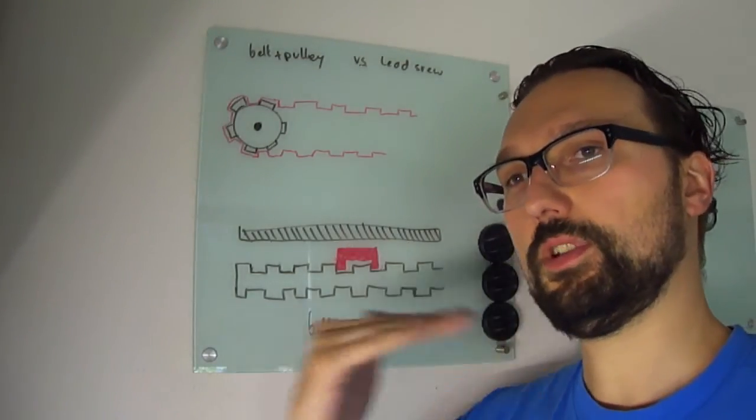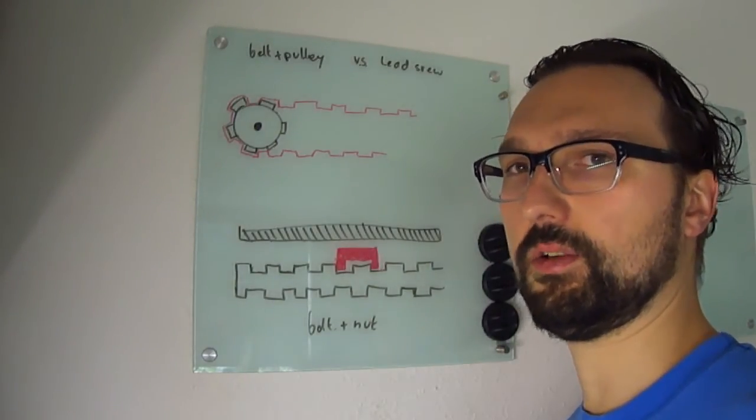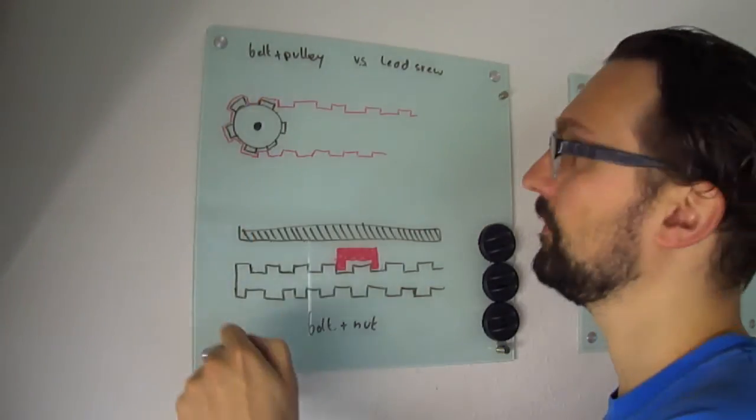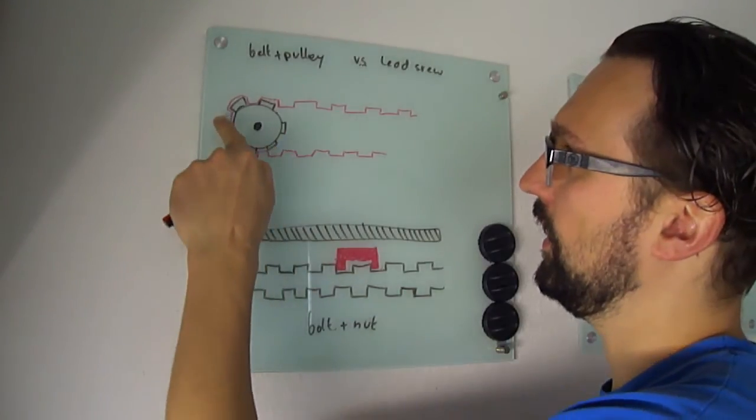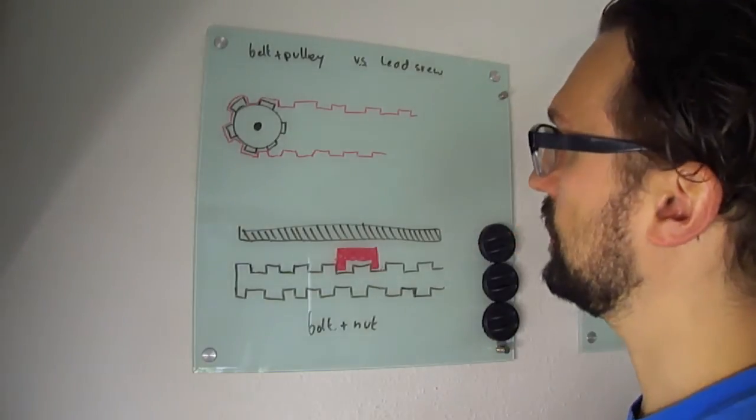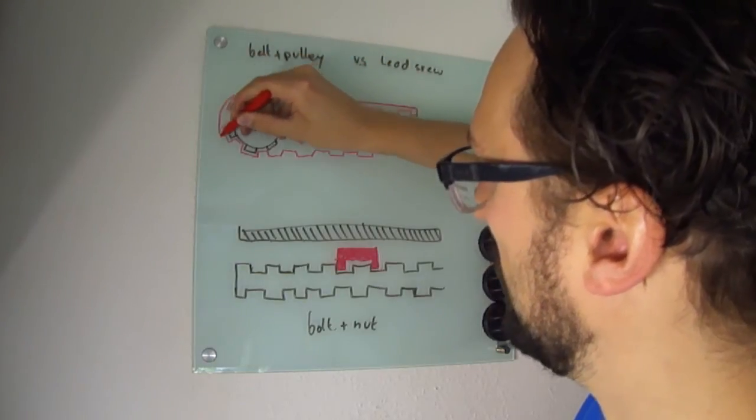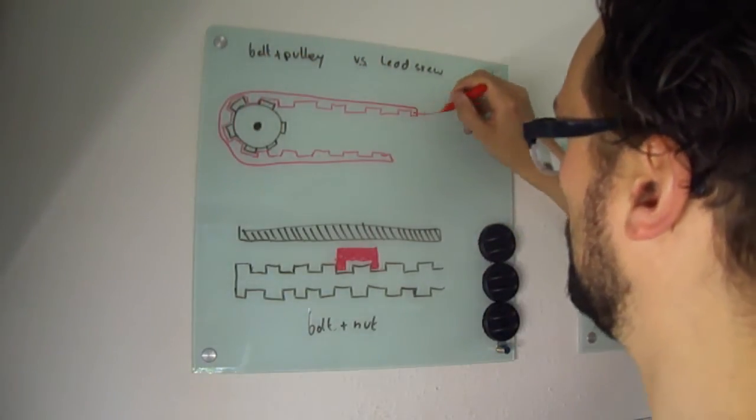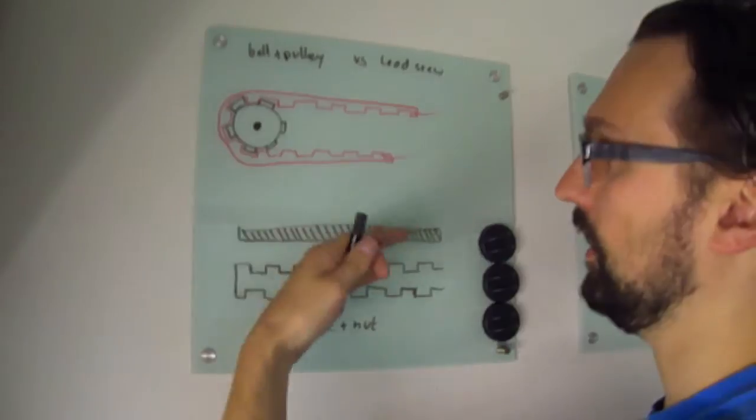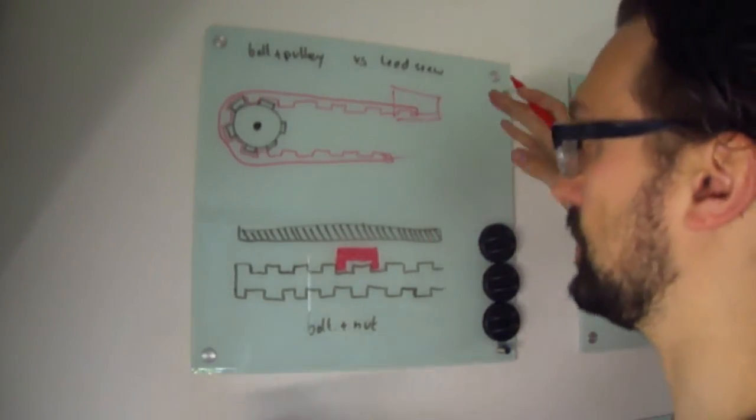For transforming the rotating motion into a linear motion there are two systems I could choose from. And the first one is the belt plus pulley system where you have a pulley, basically a gear with a belt on top. And it's very simple. So if this thing rotates then the belt is being pulled in the correct direction. And of course you can mount here your laser or something you want to move and it will move in the correct direction.